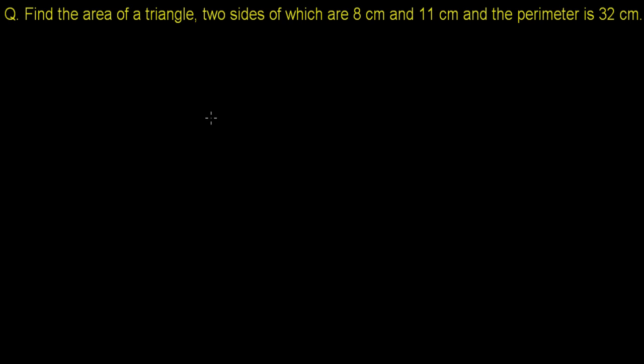After learning Heron's formula and proving it, this is the first exercise based on that. Let me read the question. The question is saying, find the area of a triangle, two sides of which are 8 cm and 11 cm and the perimeter is 32 cm.